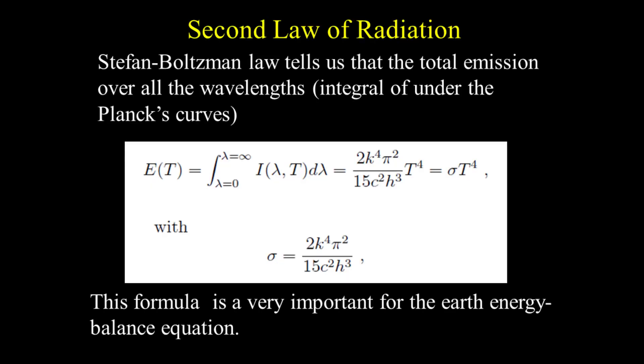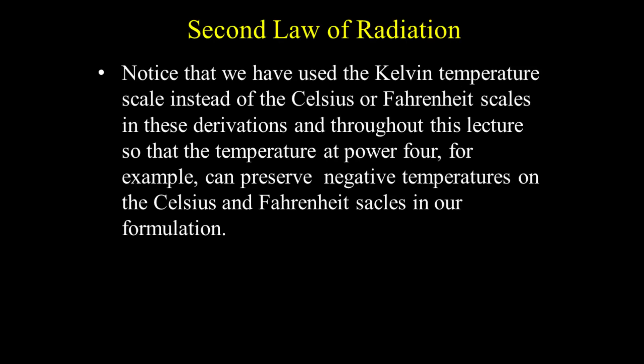In the second law of radiation, the Stefan-Boltzmann law tells us that the total emission over all wavelengths is the integral under the Planck's curves. This formula is very important for the Earth energy balance equation. We use the Kelvin temperature scale instead of the Celsius or Fahrenheit scales in these derivations and throughout this lecture, so that the temperature at power 4, for example, can preserve negative temperatures on the Celsius and Fahrenheit scales in our formulation.